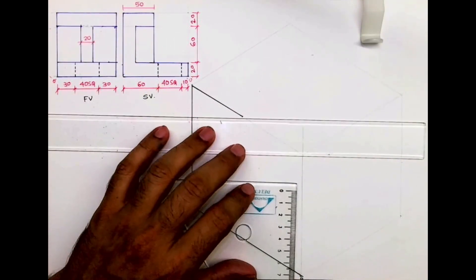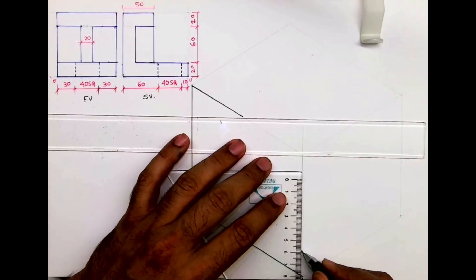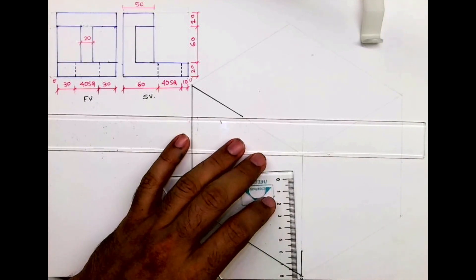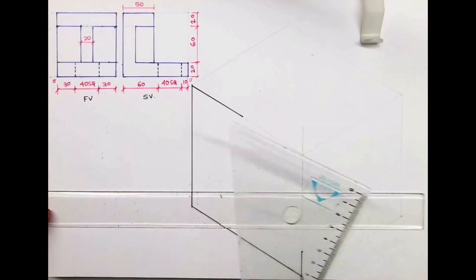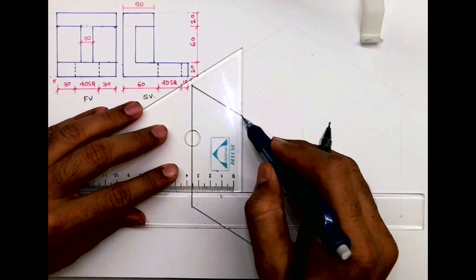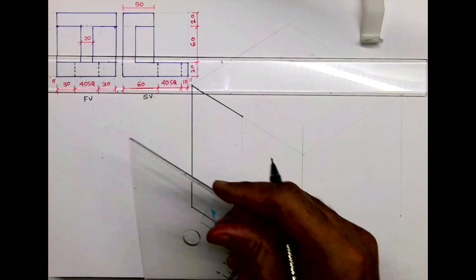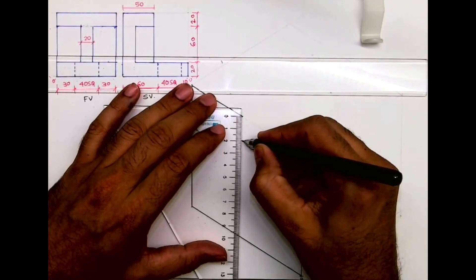Then I'll take up by 20. Then I will draw a vertical line from here, just 20.